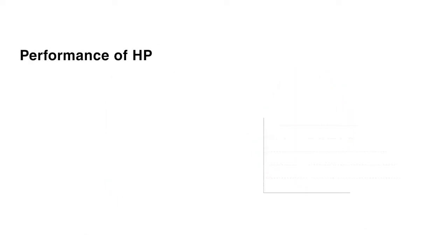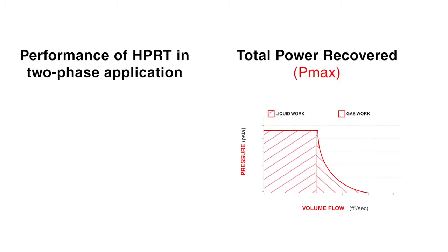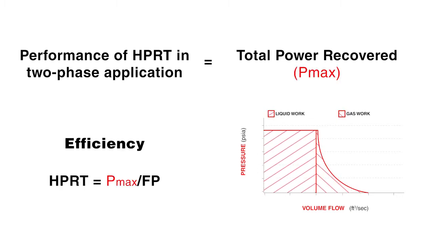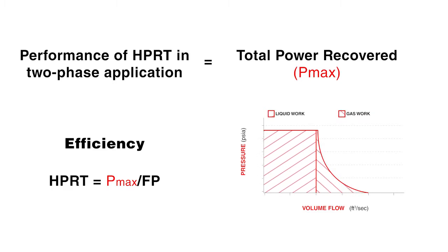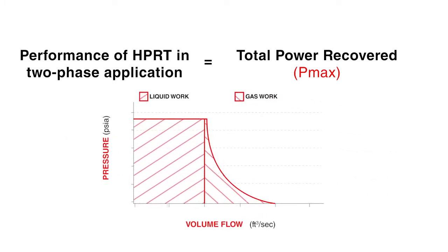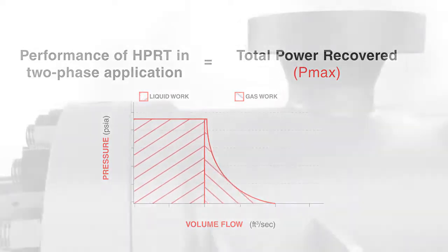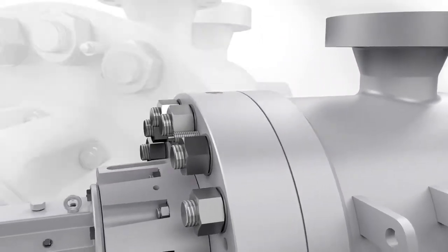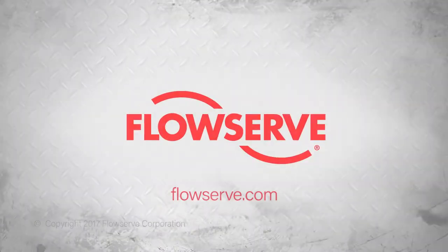This scenario presents an issue when applying the classic single phase measure of HPRT efficiency for two phase flow, a practice that results in unrealistic efficiency values. Accordingly, the most accurate way to measure and specify the performance of an HPRT in evolving gas applications is total power recovered. Learn more about FlowServe Hydraulic Power Recovery Turbines at FlowServe.com.